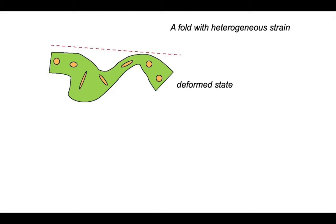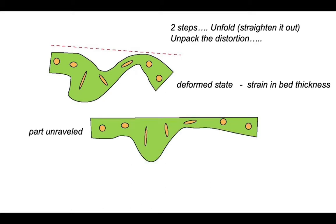Let's consider a fold like this, which has got heterogeneous strain represented by different bed thicknesses and the distortions experienced by the strain ellipse embedded in that green bed. That's the deformed state. Dealing with a situation like this requires a multi-stage process. So we'll start off by putting the bed flat and then simply rehanging the thickness of that unit, honouring its values that we see in the final deformed state, into a part-unravelled condition.